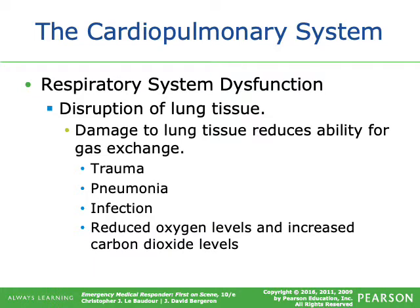Damaged lung tissue reduces the ability for gas exchange, which only occurs in the alveoli. There are literally millions of alveoli in the lungs. A small injury may still allow adequate gas exchange, but larger or more diffuse injuries cause significant problems. Trauma, pneumonia, and infection can all reduce oxygen levels and increase carbon dioxide levels.